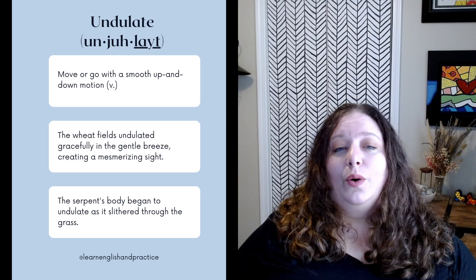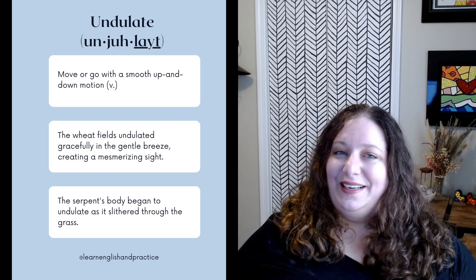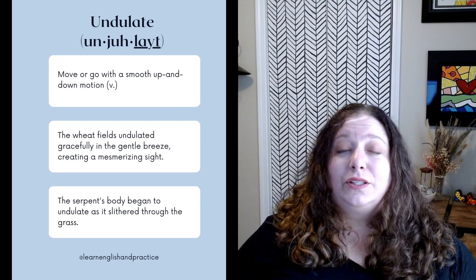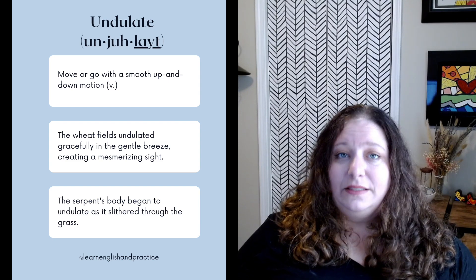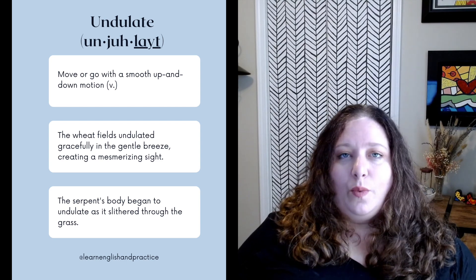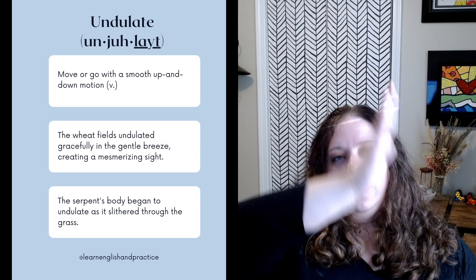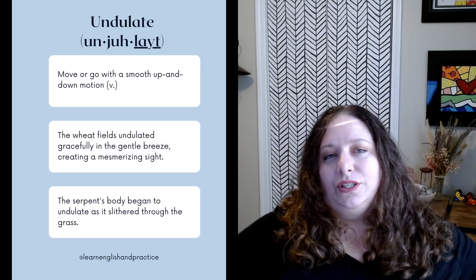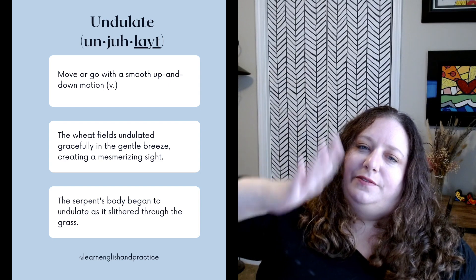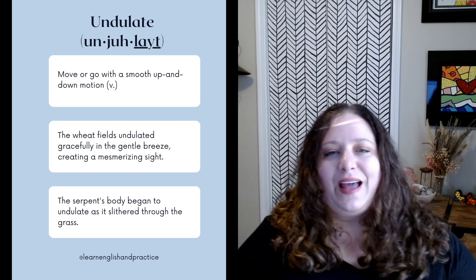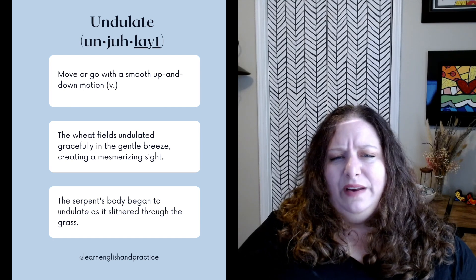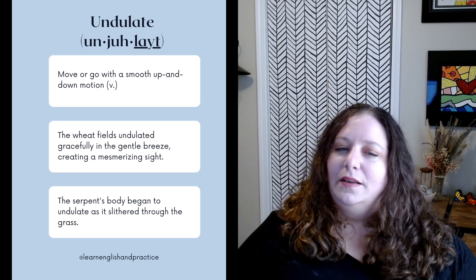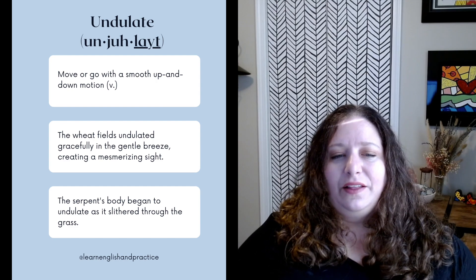Undulate. This means to move or go with a smooth up and down motion — it's a verb. Literally, undulate is this motion. I learned this word when I was a child and took swim classes. I was told to undulate when doing a dolphin kick — a kick with both legs together where you kind of flow with the water and kick up and down — undulating my hips so that my legs flowed in a way that propelled me forward. Examples: the wheat fields undulated gracefully in the gentle breeze, creating a mesmerizing sight. The serpent's body began to undulate as it slithered through the grass.